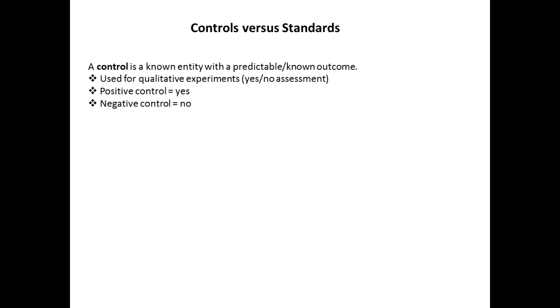Other things we talk about are controls. A control is a known entity with a predictable known outcome. It's usually qualitative — yes or no, not something we measure. Quantitative is number-based, something we can measure. There are two different types of controls: positive controls where we know the result is going to be positive.